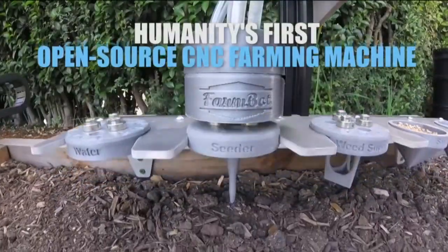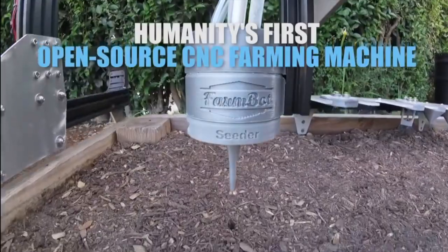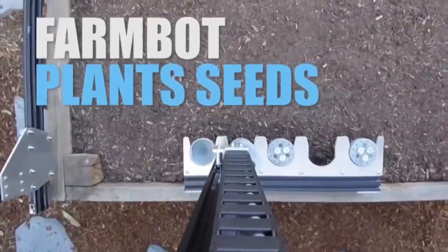Similar automation can occur for outdoor gardens, with a system of planting seeds, providing the exact amount of water and nutrients for each plant, and even removing the weeds.